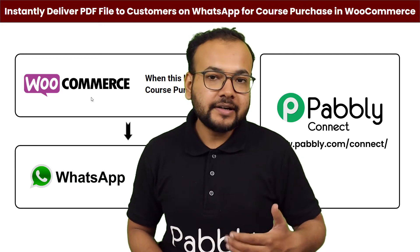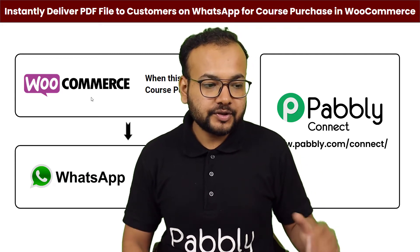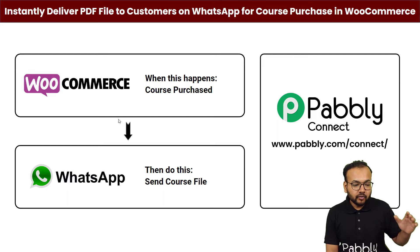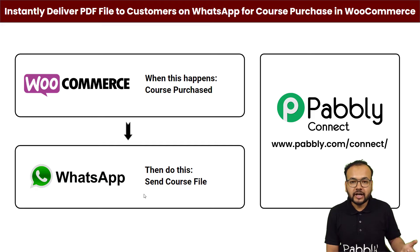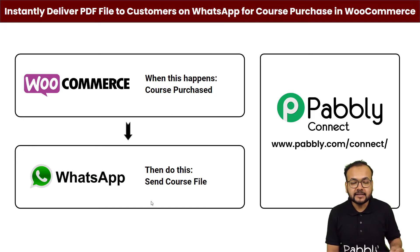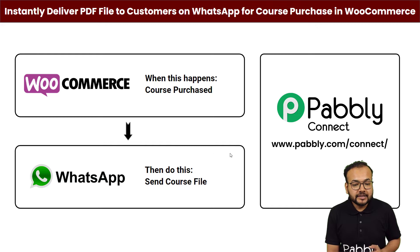Here you can see we have created an automation for this purpose. This will be the flow of this automation: as and when your course is purchased from your WooCommerce store, a course file in the form of a PDF will be delivered to the customer on WhatsApp automatically. So you do not have to see who is purchasing your course and you do not have to manually send these files.